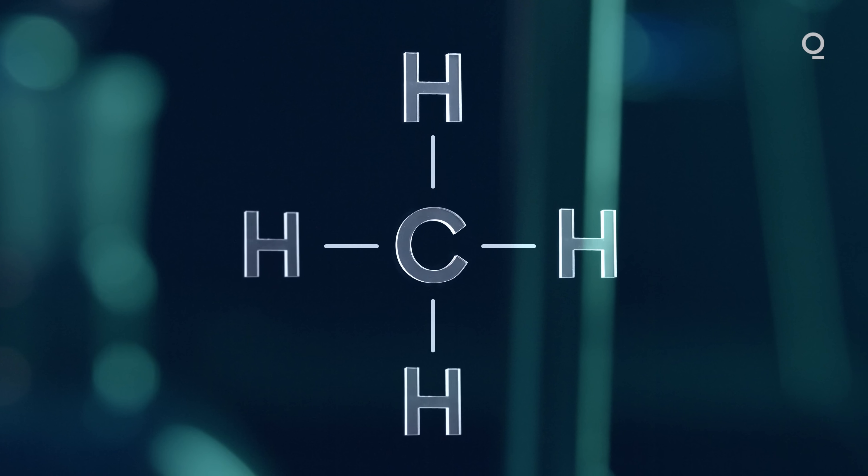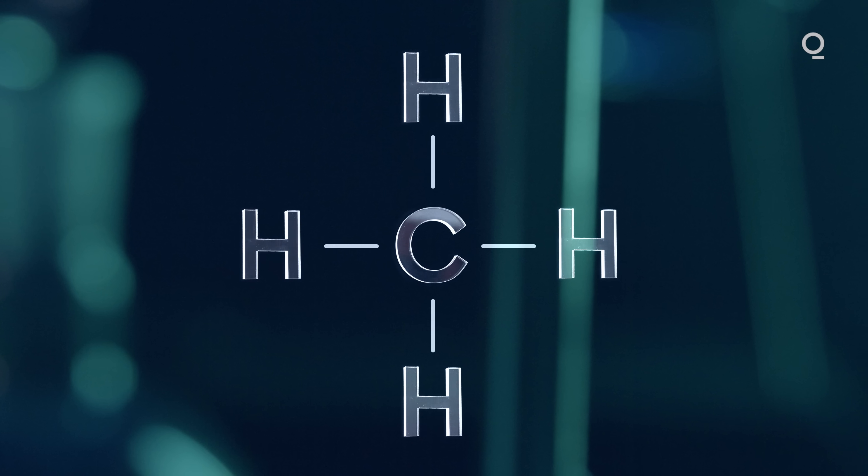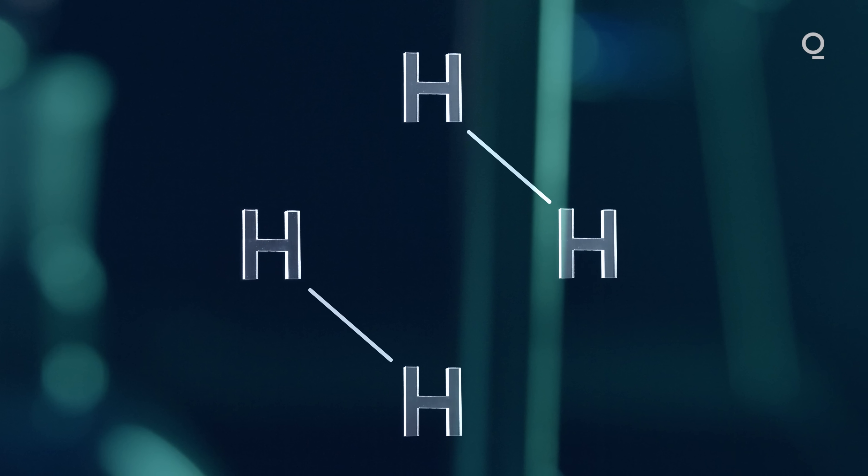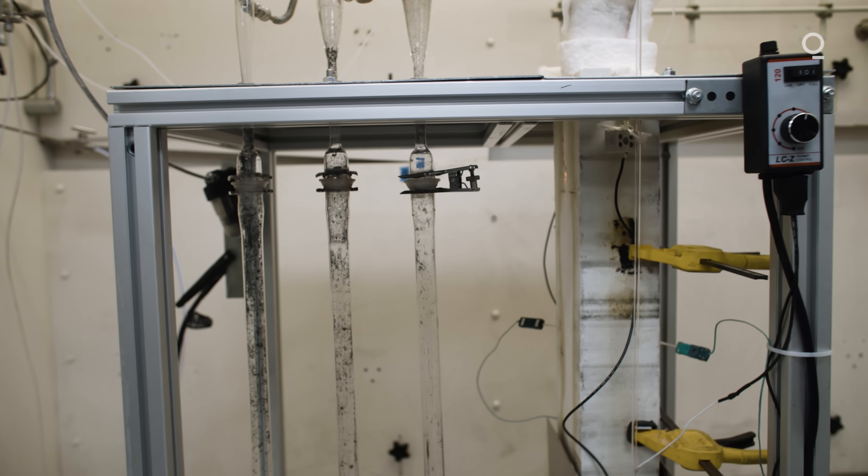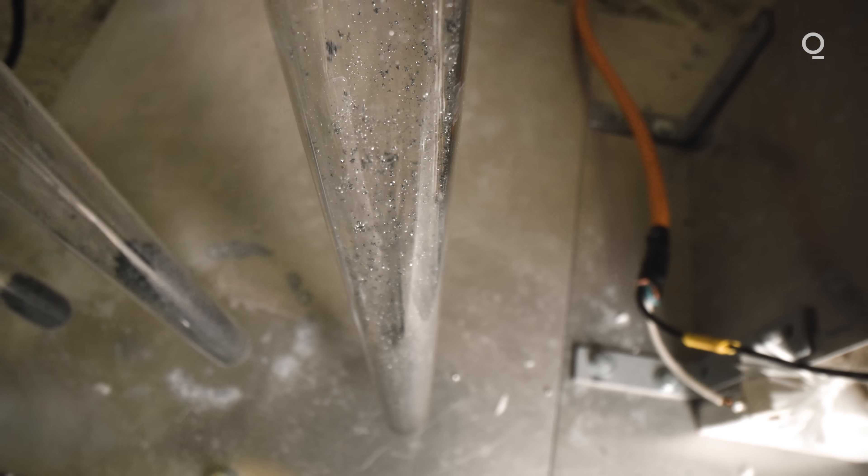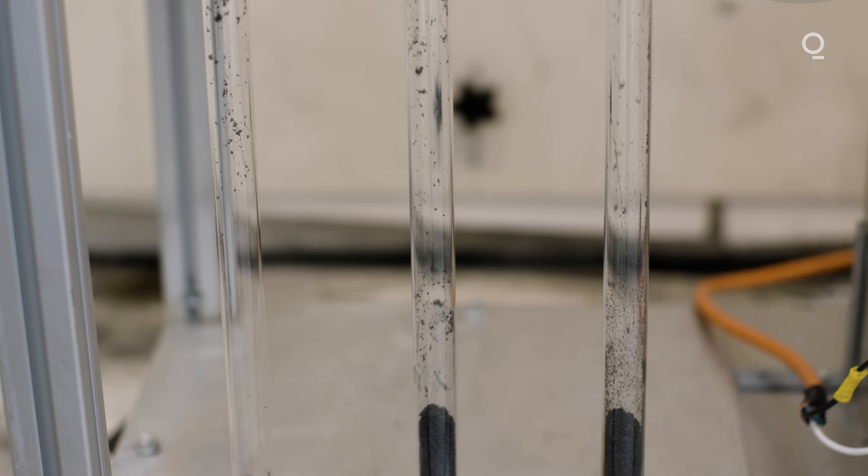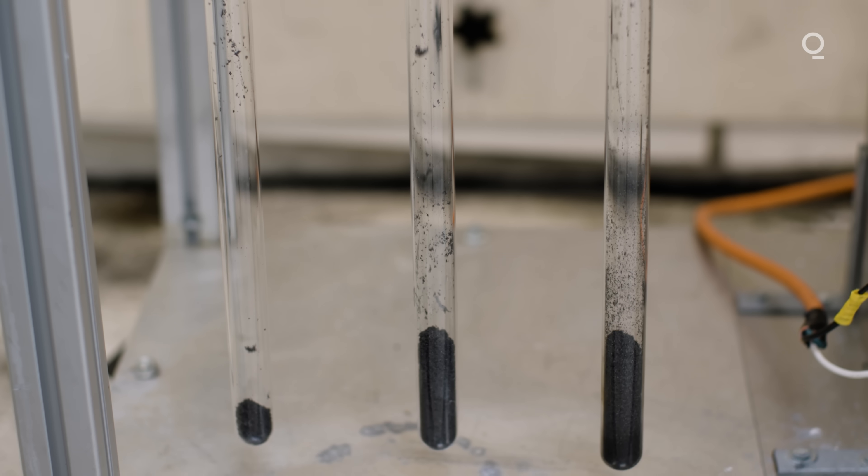Natural gas is a hydrocarbon. It's made out of hydrogen and carbon. And what we do is remove the carbon. We pull out the solid carbon out of the hydrogen that we produce. And there are no direct CO2 emissions because anything that would have been CO2 is instead solid carbon.